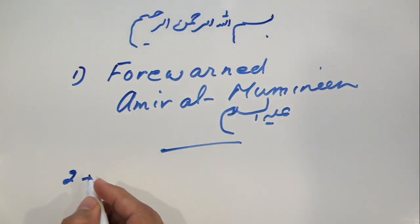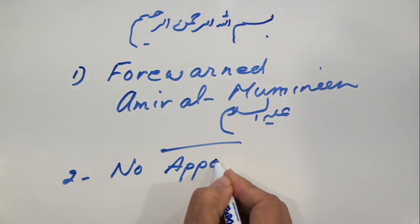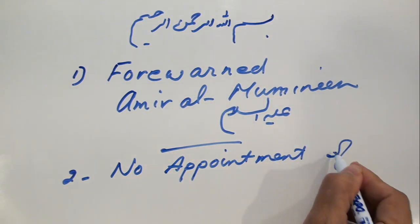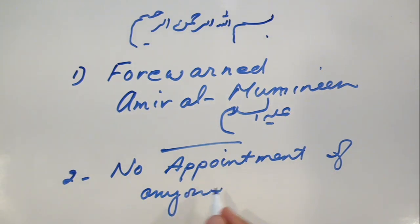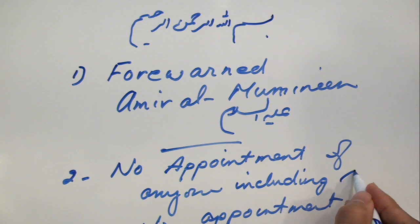Second, we mentioned that Umaris themselves they state that there has been no appointment, no appointment of anyone as Khalifa, and no appointment especially, no appointment of, we should put including Abu Bakr, including Abu Bakr.